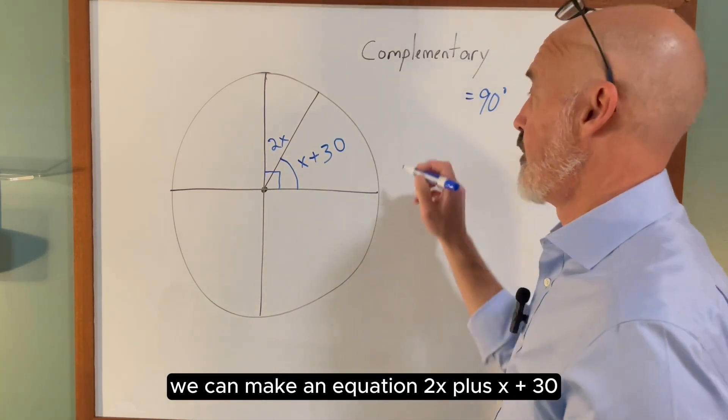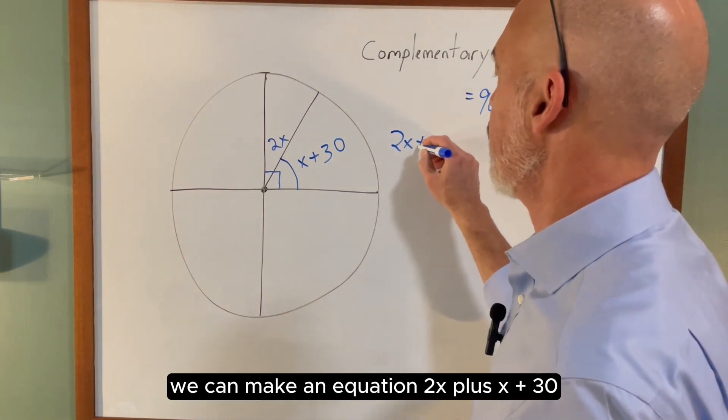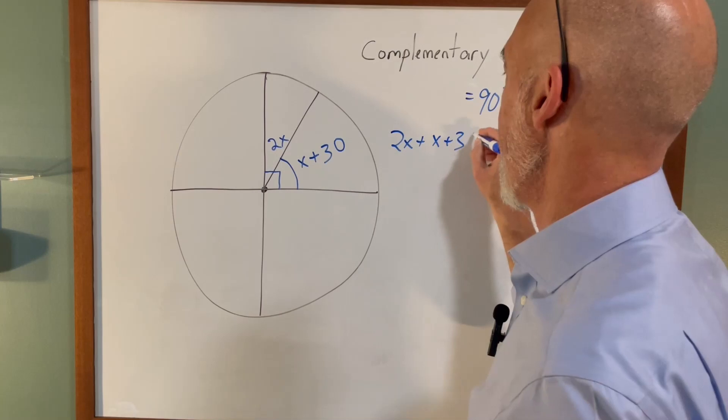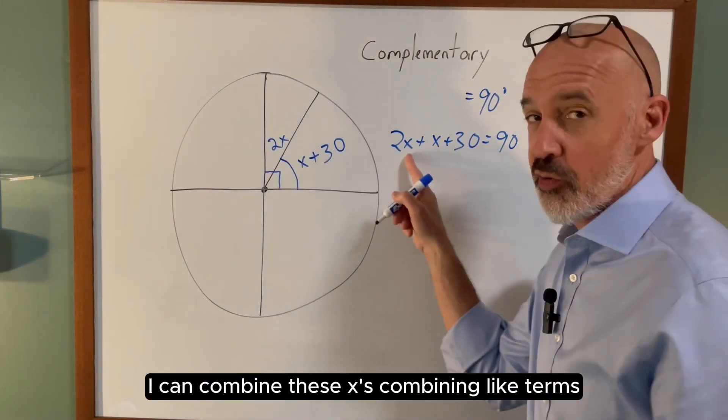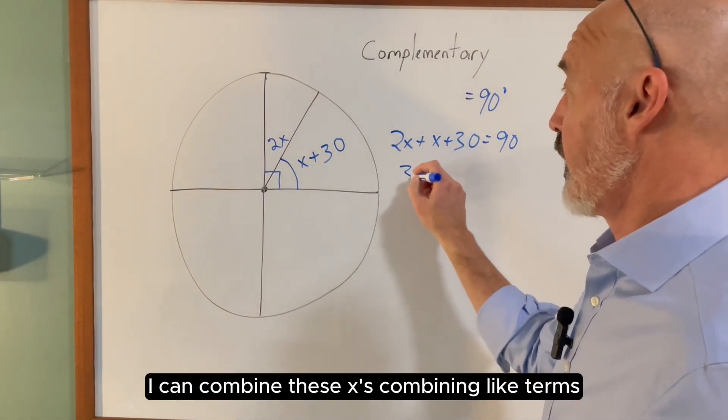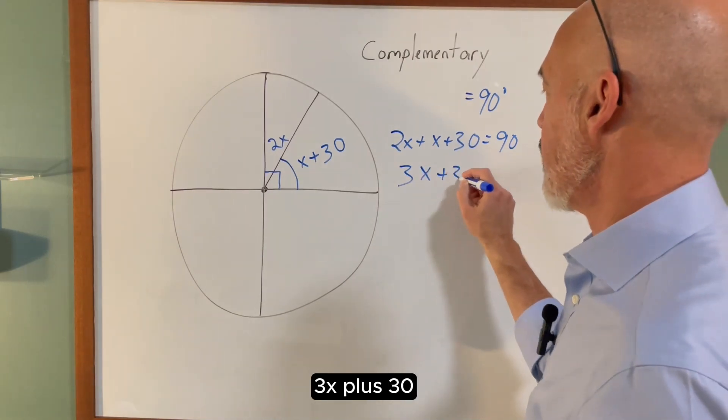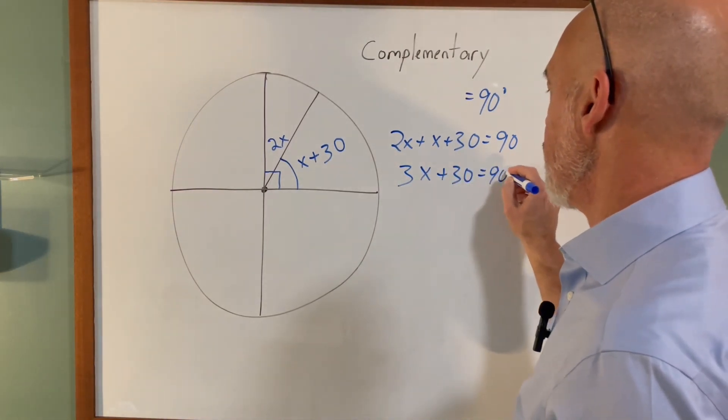Well, we can make an equation: 2x plus x plus 30, all of that equals 90 degrees. I can combine these x's, combining like terms: 3x plus 30 equals 90.